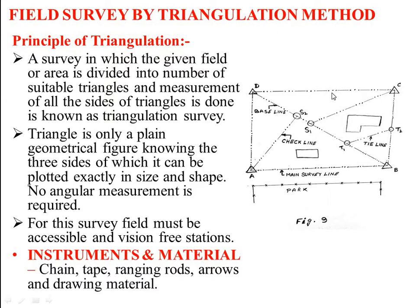This figure shows a survey in which given field or area is divided into number of suitable triangles and measurement of all the sides of triangle is done, known as triangulation survey. AB is the main survey line, while A to S2 is the check line, and BD is the base line, and T1, T2 indicates the tie line.